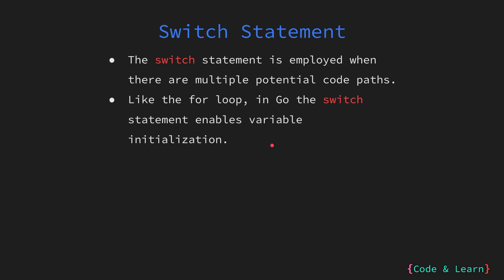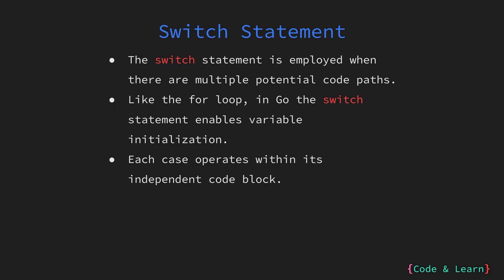Similar to a for loop, the switch statement in Go allows you to initialize a variable right in the statement. This is useful when you want to declare and initialize a variable that will be used in the switch statement. In a switch statement, each case represents a specific condition or value. When a condition matches, the associated code block is executed. Importantly, each case block operates independently, meaning the code within one case does not affect other cases.